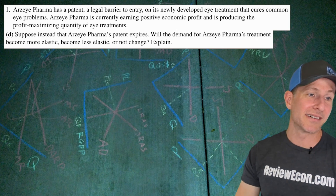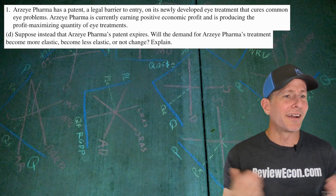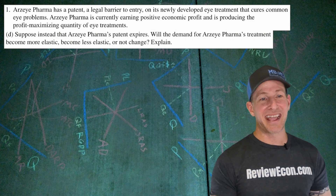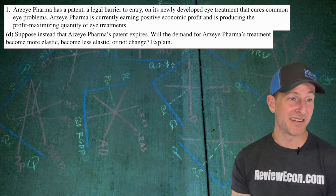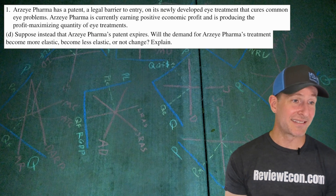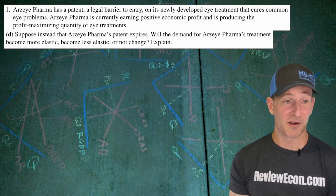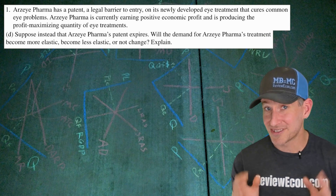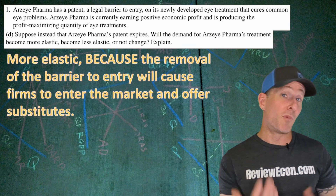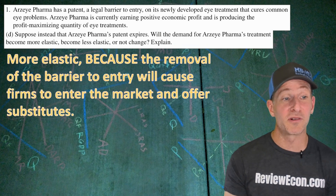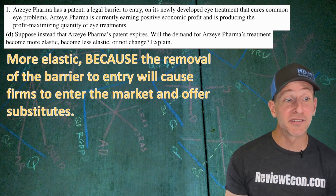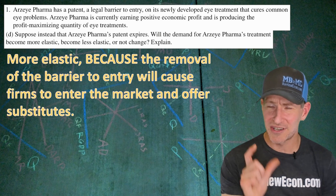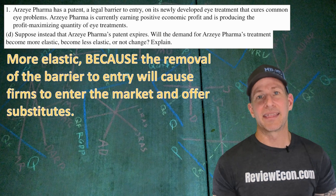Assume instead that Arzai Pharma's patent expires. What will happen to the demand for Arzai Pharma's treatment — will it become more elastic, become less elastic, or not change? If the barrier to entry is eliminated, firms will enter the market and offer substitutes. The answer is more elastic, because the removal of the barrier will cause entry. Firms will enter the market to seek those profits, and they will offer substitutes. As long as you have the term 'substitutes from firms entering,' you should be good.